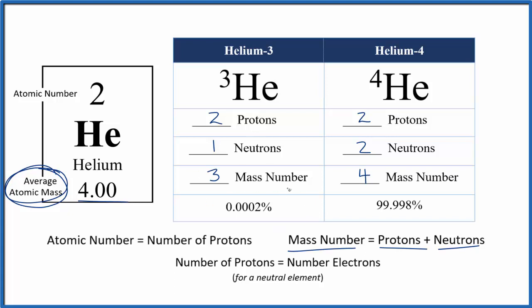So this number 4 is an average - it's a rounded off average of these numbers. Do note that there are other isotopes of helium, but they're radioactive and they decay quite quickly.